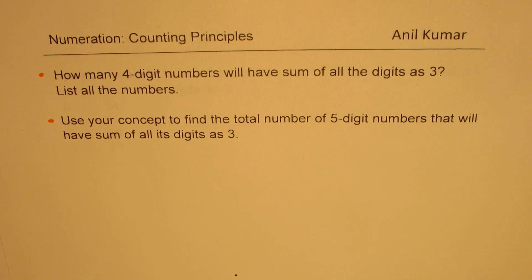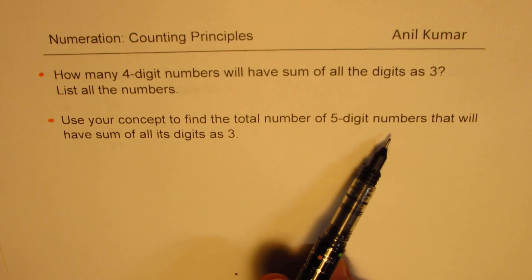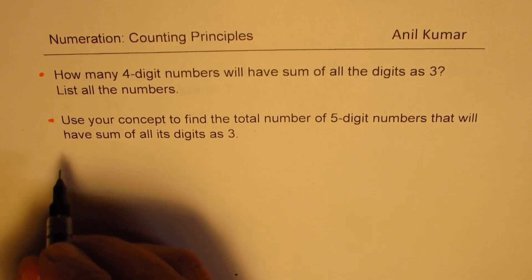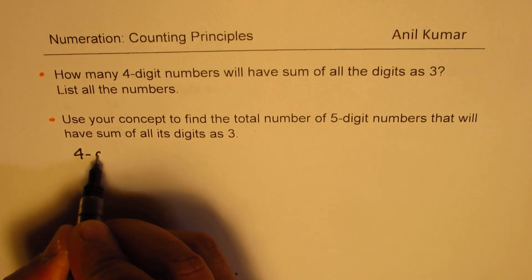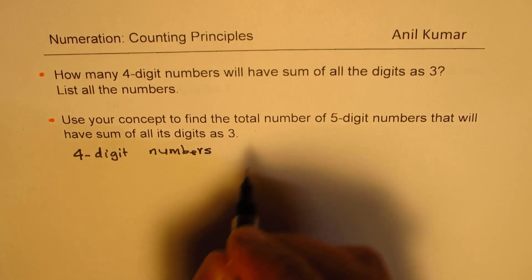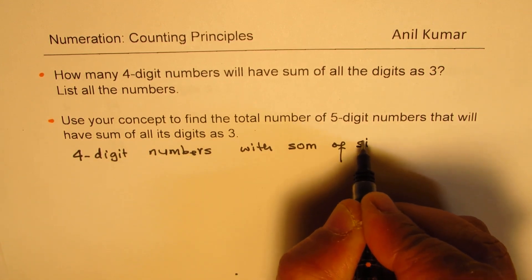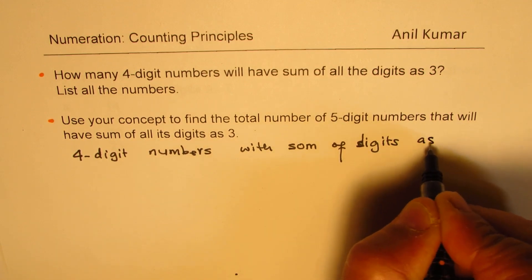List all the numbers. The second question is: use your concept to find the total number of five-digit numbers that will have the sum of all its digits as three. So the only difference between the first and second question is that we are considering four-digit numbers first, and then we'll extend our knowledge to five-digit numbers.